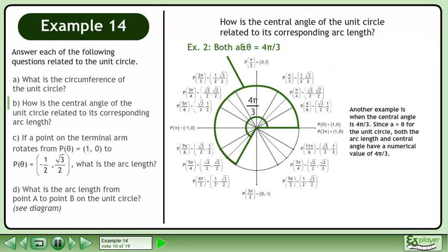Another example is when the central angle is 4π over 3. Since a equals θ for the unit circle, both the arc length and central angle have a numerical value of 4π over 3.